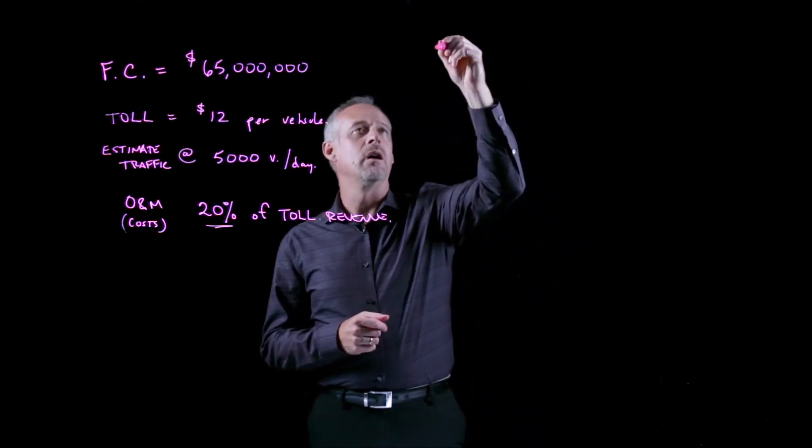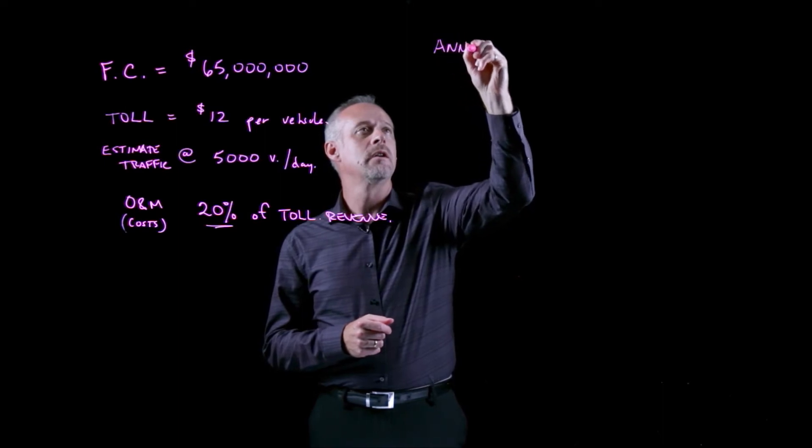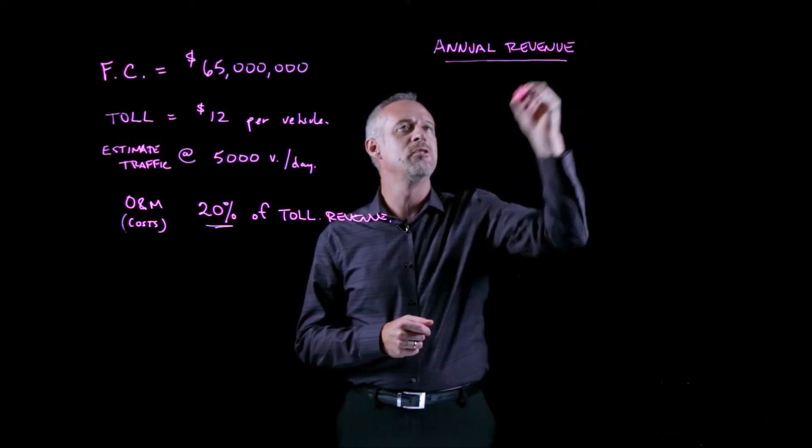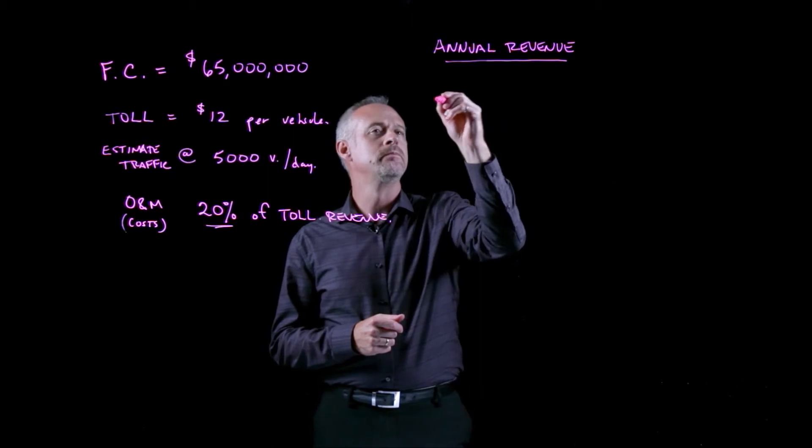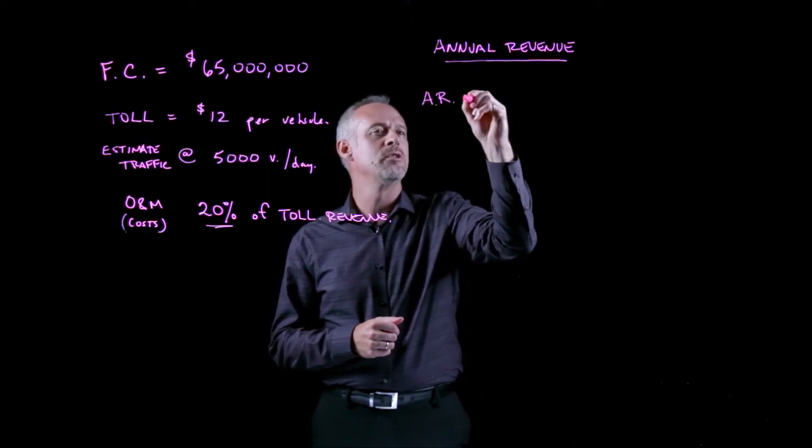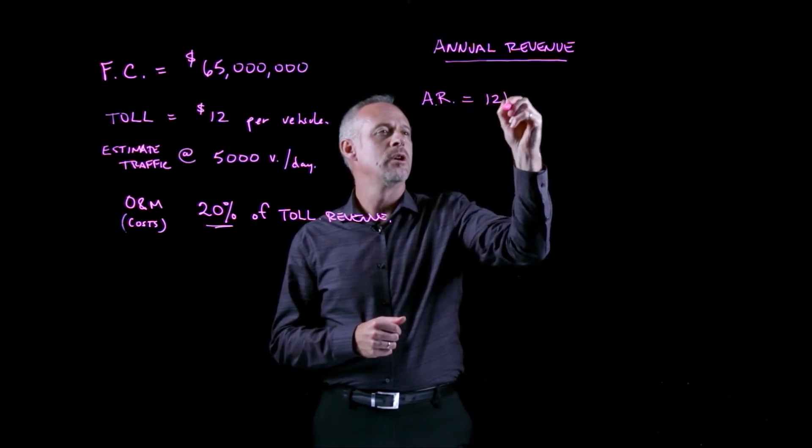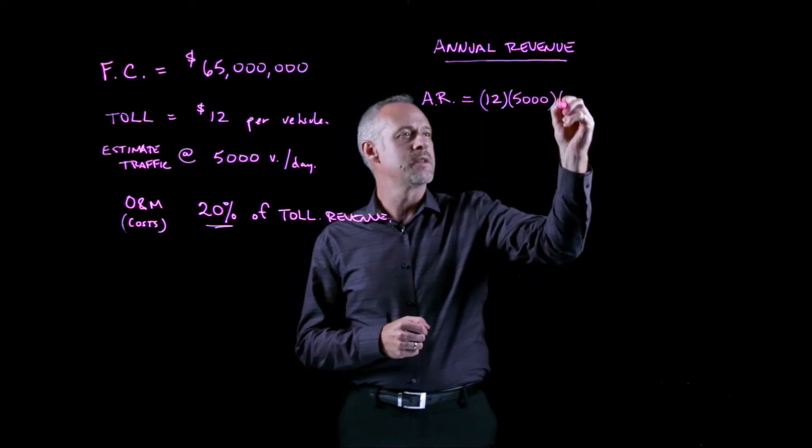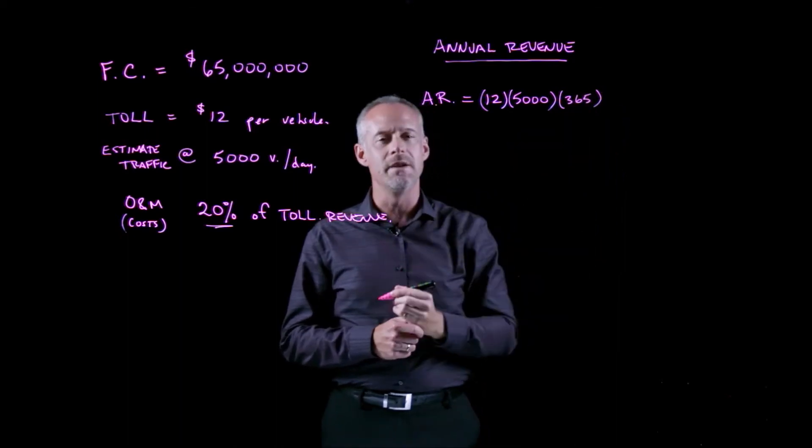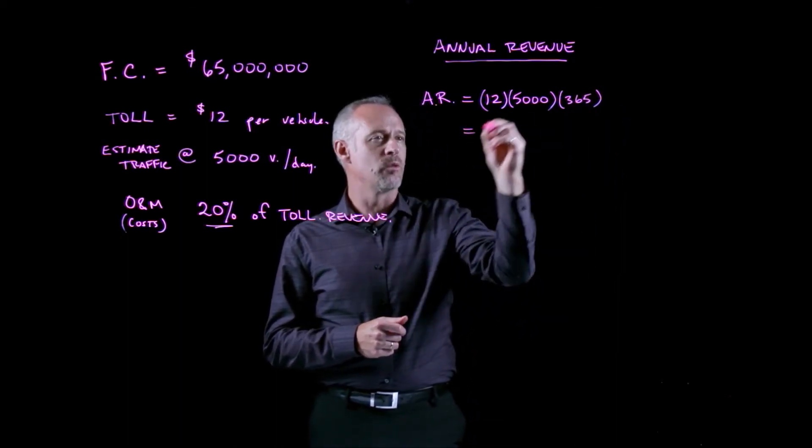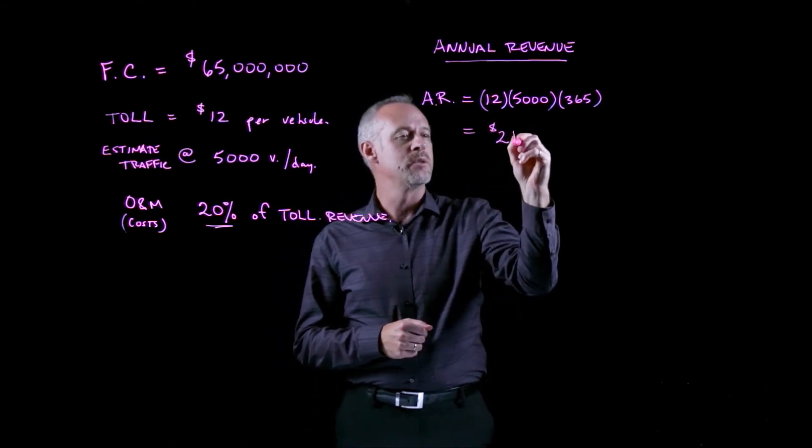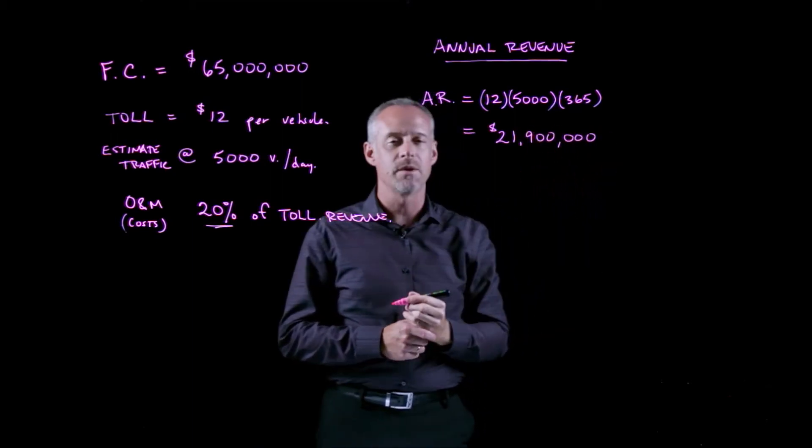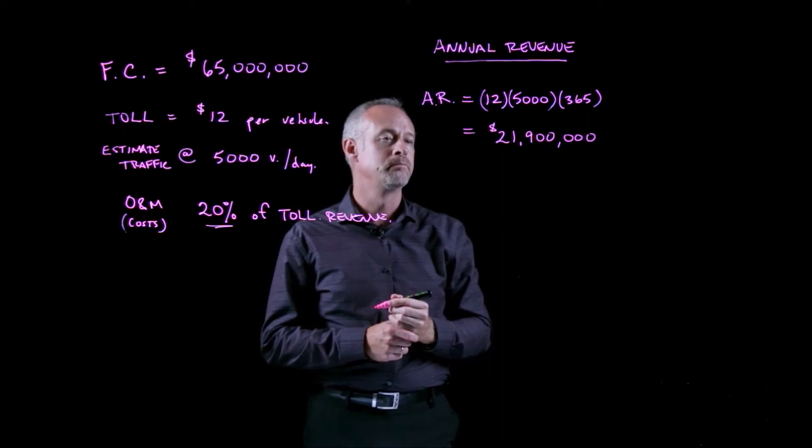Let's do the annual revenue. So the annual revenue for the bridge, let's just call it AR, annual revenue is going to be equal to our $12 toll times our daily estimate of 5,000 vehicles times 365 days in the year. So we multiply that out and we get $21,900,000 as our annual revenue from tolls.